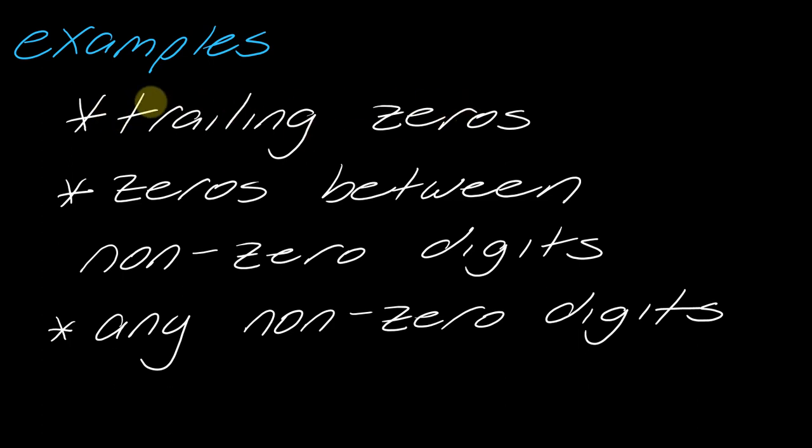Some examples of things that make significant digits: trailing zeros that are being spelled out, any zeros between non-zero digits, and any non-zero digits.